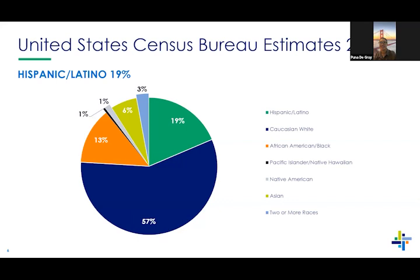Our next slide shares data from the U.S. Census Bureau, from 2021. The graph shows that 19% of the United States population is Hispanic and Latino. Caucasians make up 57%, African American and Black 13%, Pacific Islander 1%, Native American 1%, Asian American 6%, and three percent is of two or more races — that makes up the population per the U.S. Census Bureau.